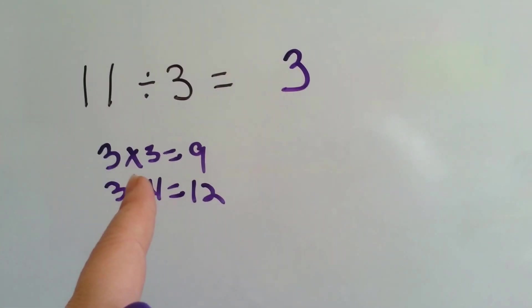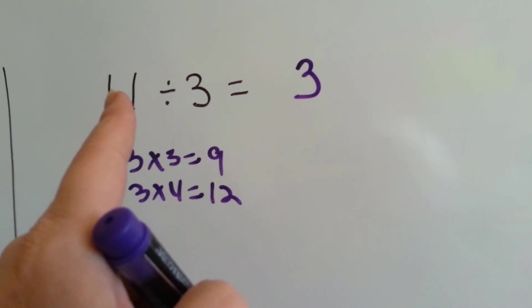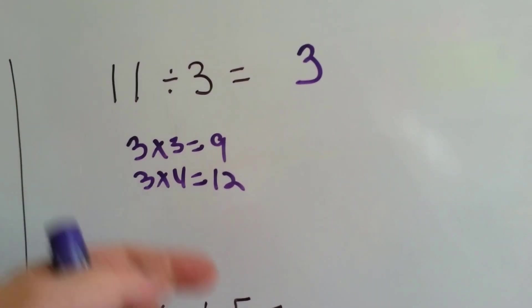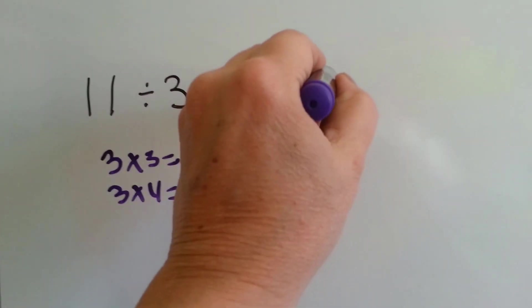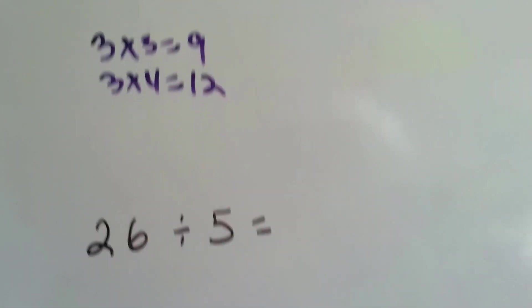But how many are left over from the 9 to the 11? 9, 10, 11. There's 2 more. So we have a remainder of 2. See? Let's try this one.